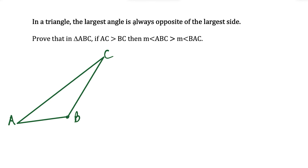Angle BAC is the angle opposite of side BC. Since we're starting with the assumption that AC is greater than BC, what I'm going to do for this proof is I'm going to extend the shorter side so that it is the same length as the longer side. We could say that this is possible because AC is the longer side.